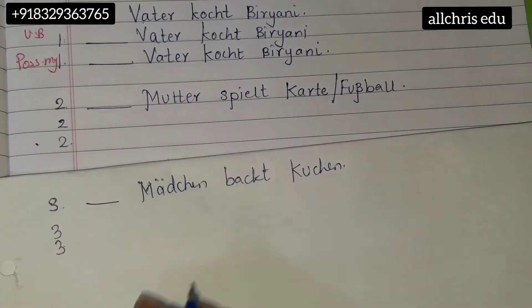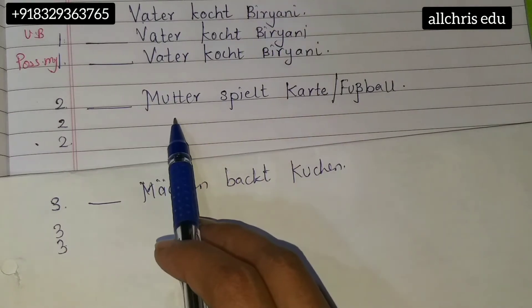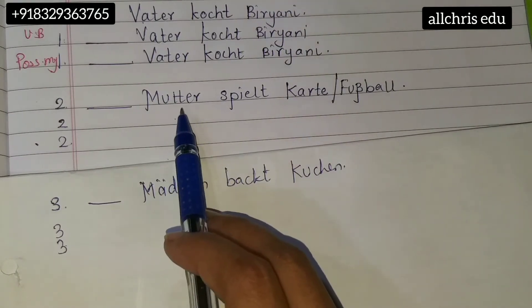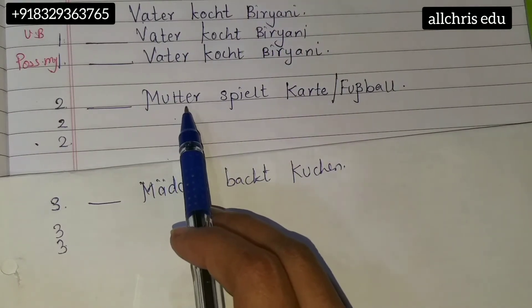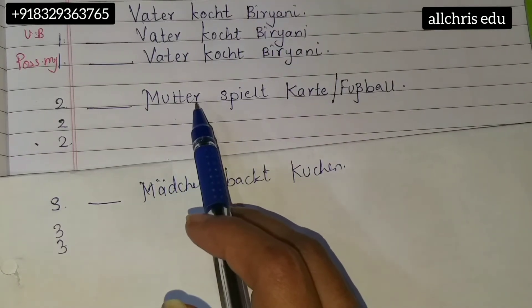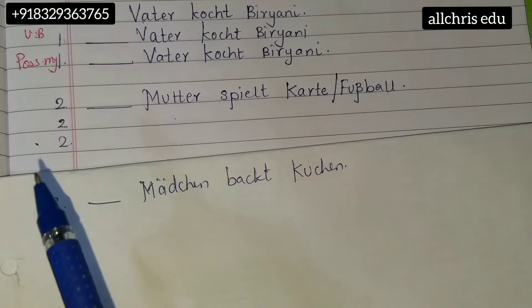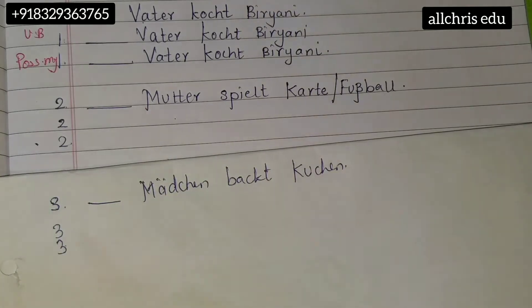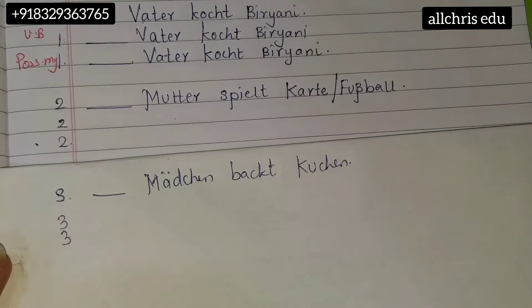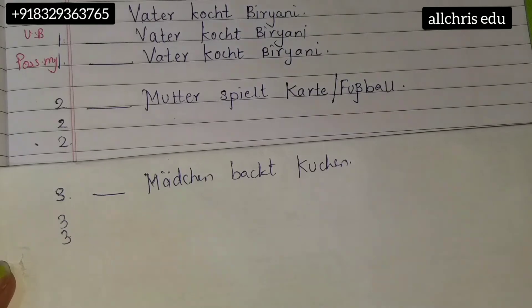We use the nominative column of the unbestimmt article chart, and from the nominative column of the possessive chart. If it is male or neutral, no 'e' endings. If it is female or plural, we add 'e' at the end of the word. In this way, nominative ends here. Further, we are going to see accusative sentences.